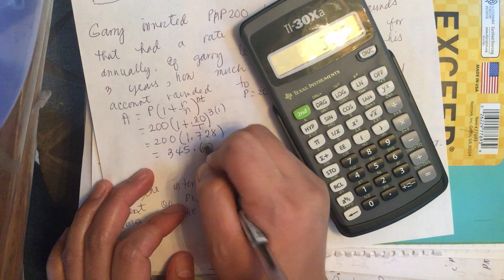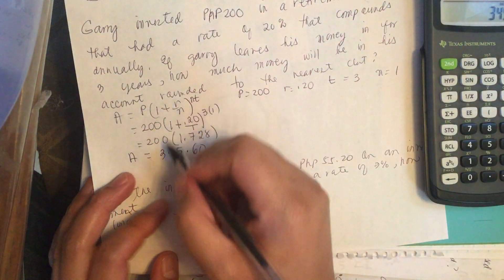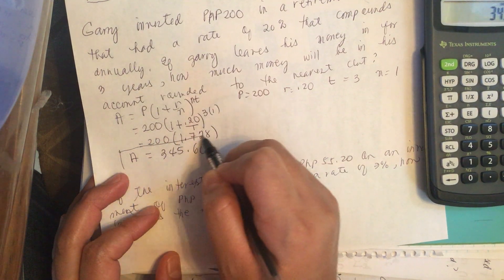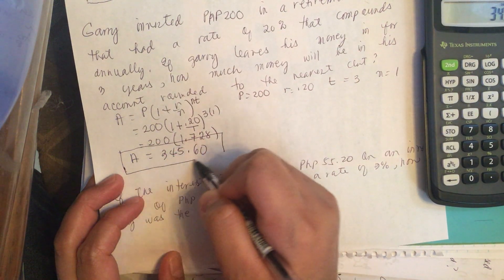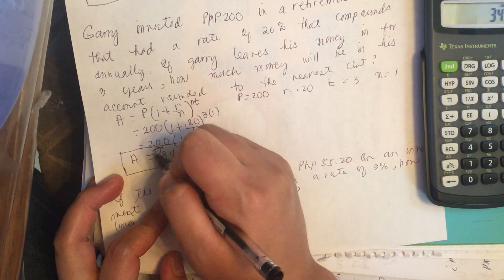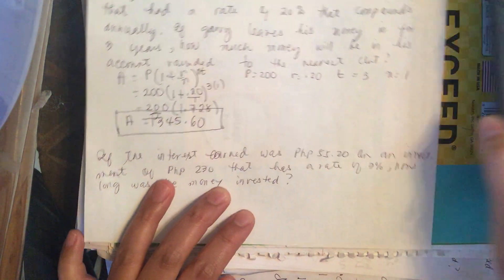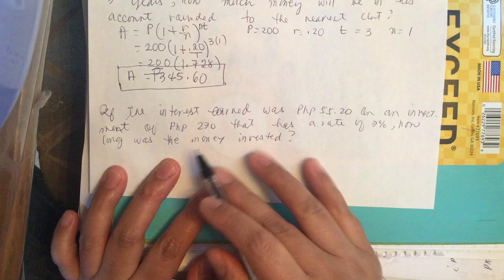After 3 years, Gary will have 345.60 pesos in the bank. So we don't forget the units.